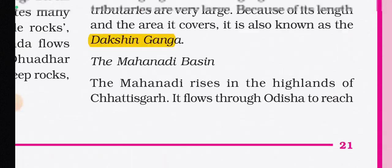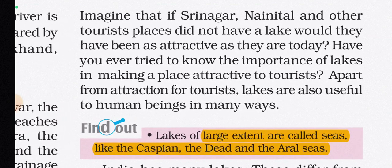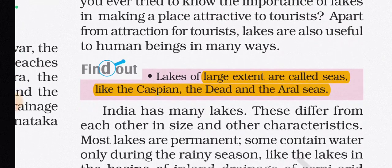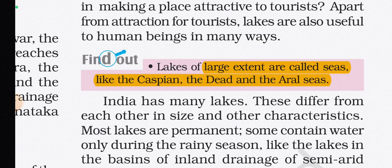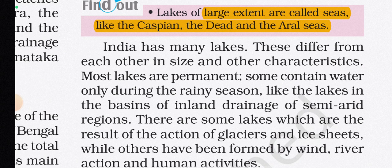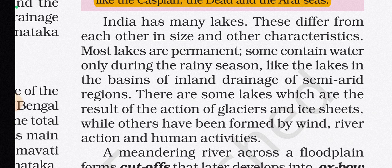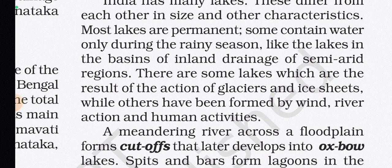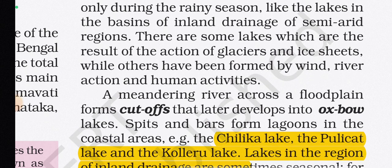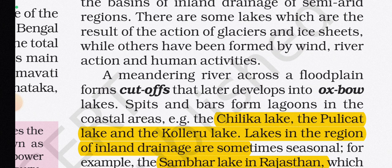Consider how places like Srinagar and Nainital would be far less attractive without their lakes. Apart from tourist attraction, lakes are useful to human beings in many ways. Very large lakes are sometimes called seas — like the Caspian Sea, Dead Sea, and Aral Sea — though they are all surrounded by land. India has many lakes differing in size and characteristics. Most are permanent; some contain water only during the rainy season, like lakes in inland drainage basins of semi-arid regions.